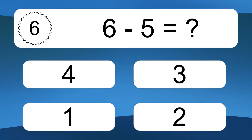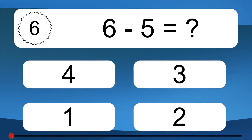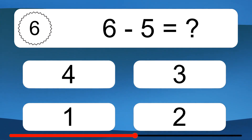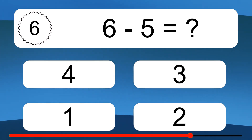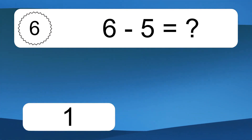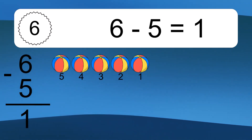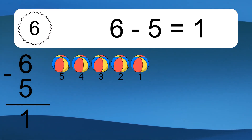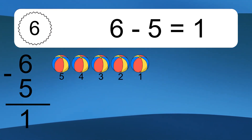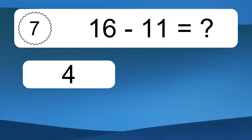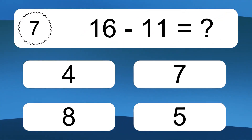6 minus 5 equals what? 6 minus 5 equals 1. Let's count it: 5, 4, 3, 2, 1.